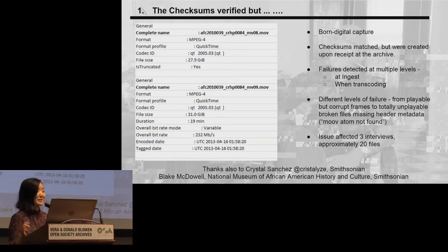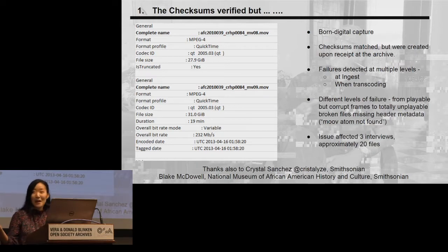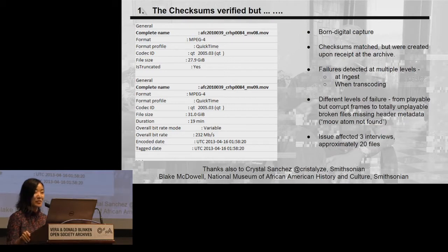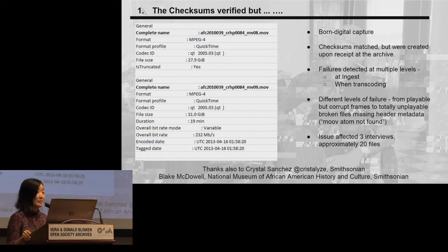Maybe to start off some discussion on this particular one before we move on — the moov atom not found issue is probably very prevalent given the way it's written. I'm curious if other people have had experience with it and have been able to actually fix the moov atom or recover those files. In our case, we were only able to recover those simply because we had extra copies. And do people generally, as a matter of course, rewrite any of these types of files to move the atom to the beginning? I believe there's like a fast start flag.